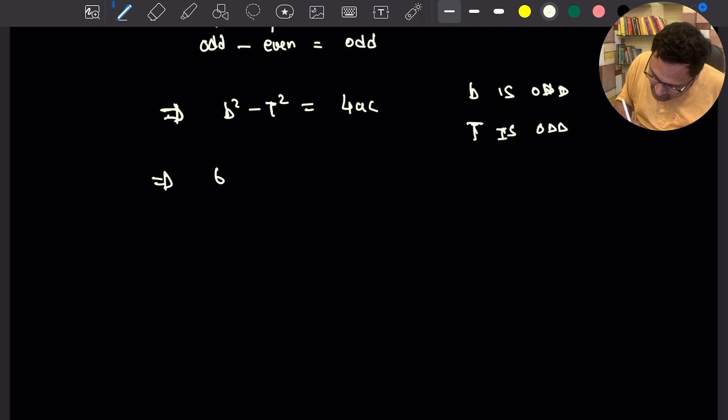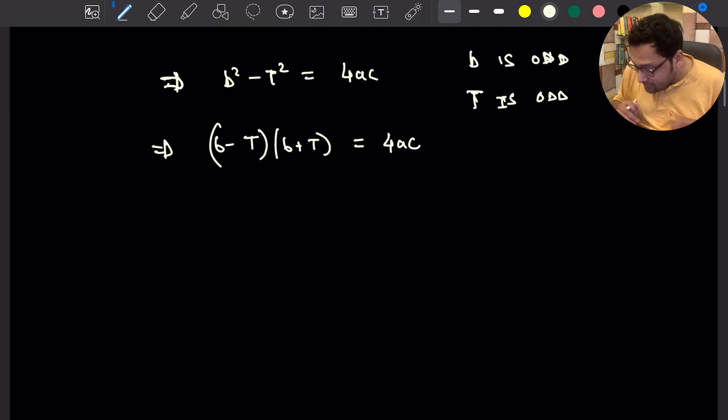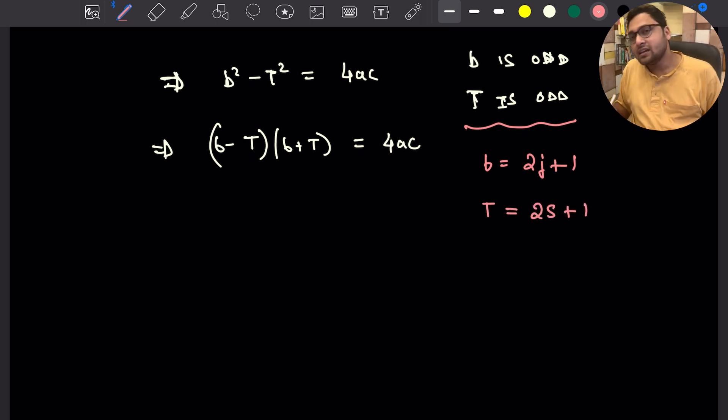Let's take the T square to the left-hand side. So B square minus T square equal to 4AC, where B is odd and we just saw that T is odd. So we have B minus T, B plus T equal to 4AC. We want to show that this is not possible. B minus T times B plus T. B is odd. Now I can replace B by some 2J plus 1 and I can replace T by some 2S plus 1. This is the form of odd numbers.